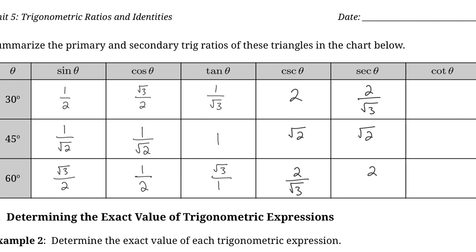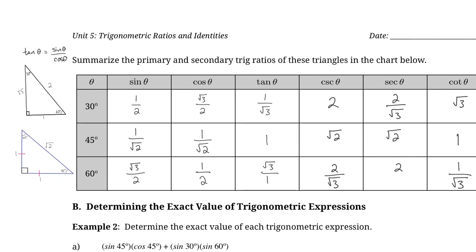Lastly, our cotangent ratio is the reciprocal of our tangent ratio. The cotangent of 30 degrees is the square root of 3 over 1. The cotangent of 45 degrees is just 1. And the cotangent of 60 degrees is 1 over the square root of 3. So these are our primary and secondary trig ratios for our special angles. I wouldn't recommend just memorizing these, but become very familiar — even memorize these two special triangles, our 30-60-90 triangle and our 45-45-90 triangle.